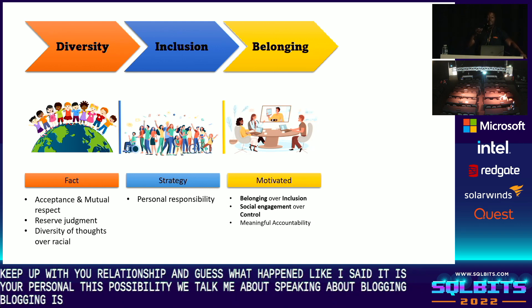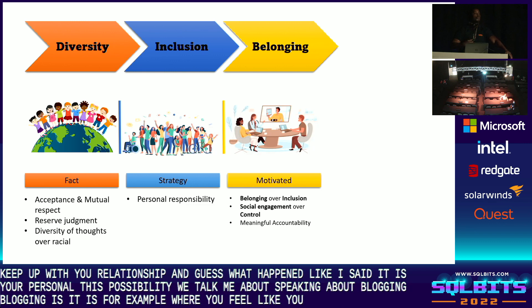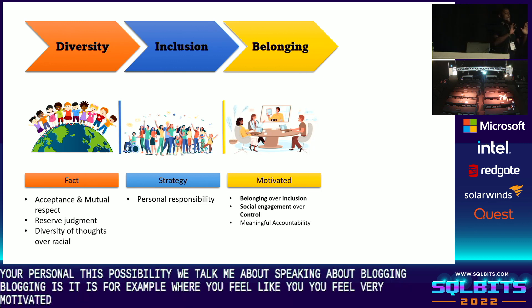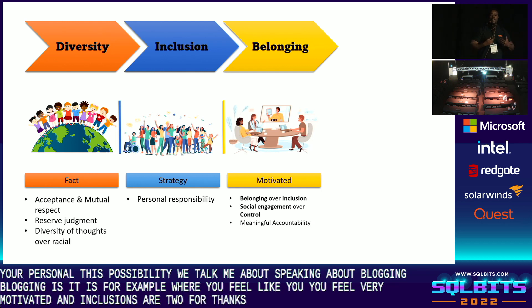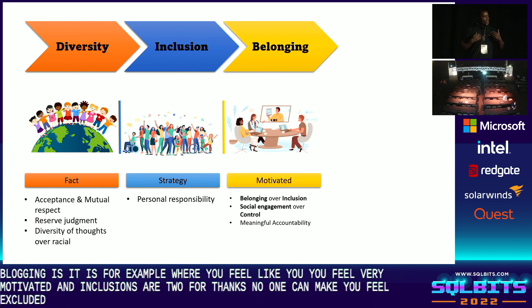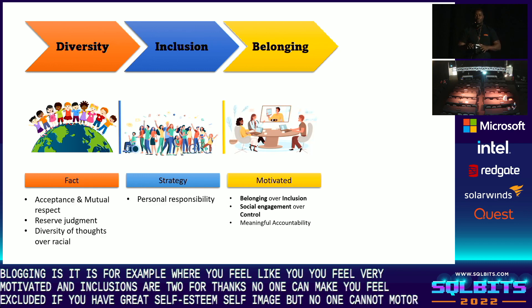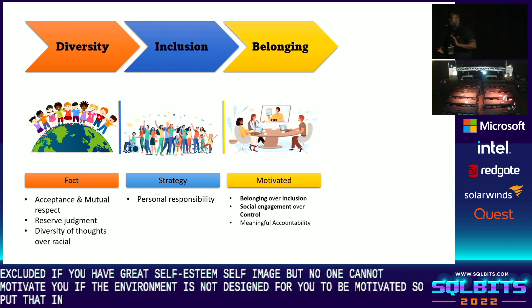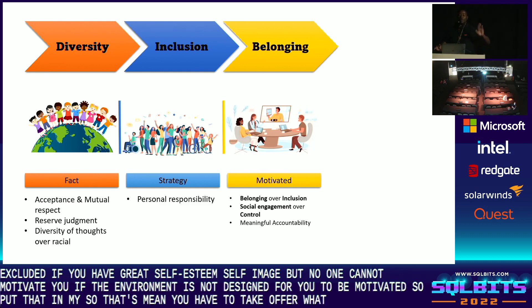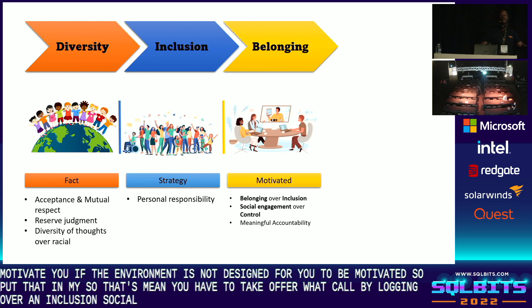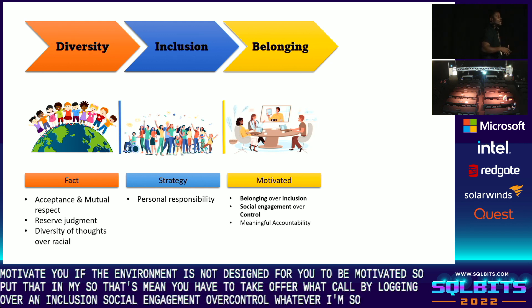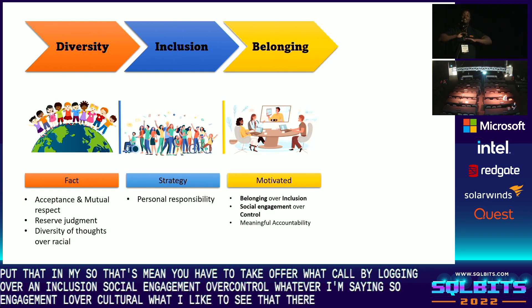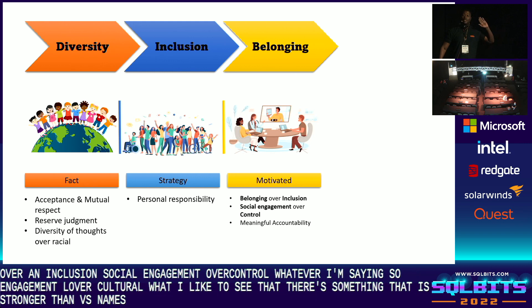We spoke about belonging. Belonging is where you feel very motivated. Belonging and inclusion are two different things. No one can make you feel excluded if you have great self-esteem and self-image. But no one can motivate you if the environment does not desire for you to be motivated. So you have to think of belonging over inclusion, social engagement over control. There is something stronger than racism — and that thing is insecurity.